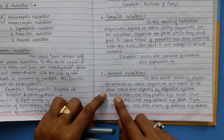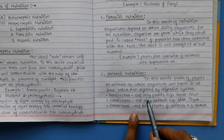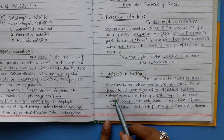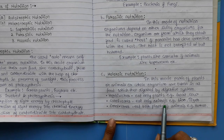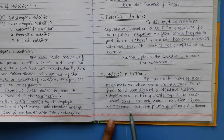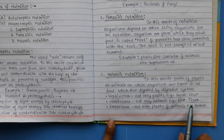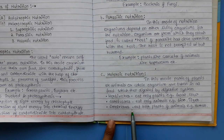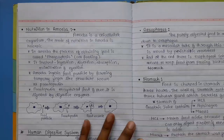In holozoic nutrition there are three categories: herbivorous — eat only plants (e.g., goat, cow); carnivorous — eat only animals (e.g., lion, tiger); and omnivorous — eat both plants and animals (e.g., humans, because we eat vegetables as well as meat).